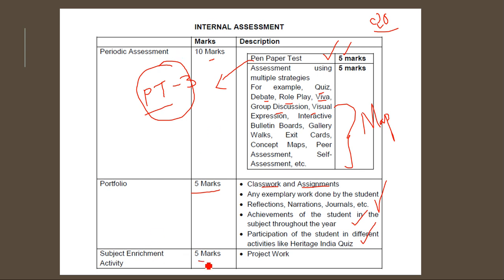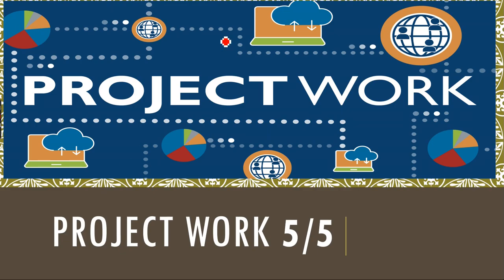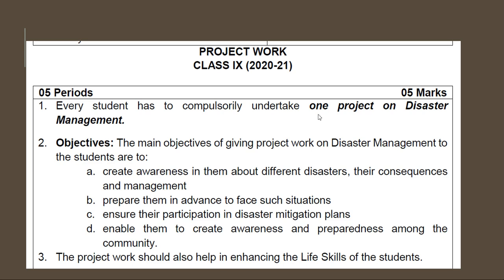The last 5 marks are for project work. These marks are really important — out of 20 you need to get 7, and out of 80 you need to get 27, so your passing mark is 33 out of 100. The project is compulsory and this year you are going to make a project on Disaster Management.